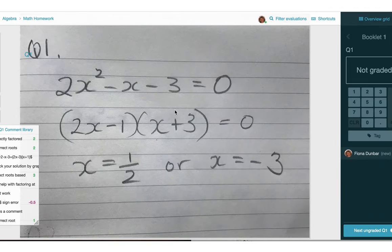So I'll click into a question to begin grading, and I can see that several rubric items have been added here to the comment library.